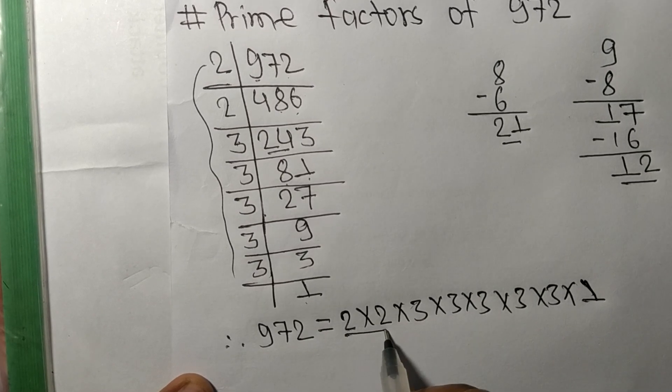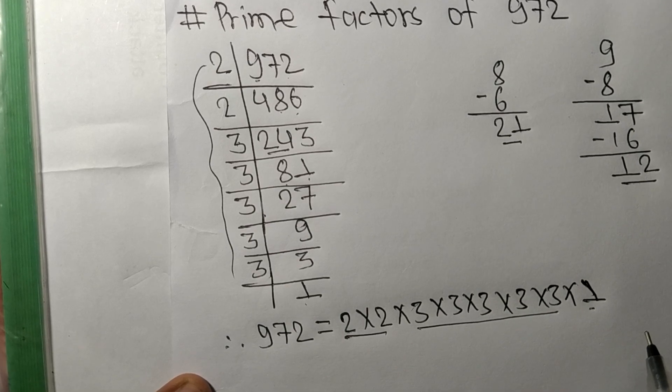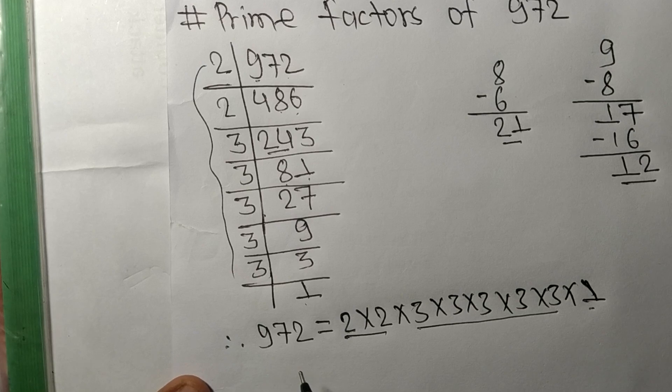So these 2, 3, and 1 are the prime factors of 972. So this much for today and thanks for watching.